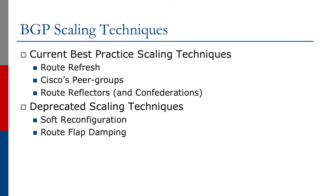Some of the current best practice scaling techniques include route refresh and the BGP route reflector. Cisco and other vendors have also introduced the concept of peer groups. There's also a scaling technique called route flap damping, which was introduced in the mid 90s to address a particular issue internet operators of the day were facing. We'll also look at Cisco's version of route refresh, which was introduced to deal with a particular issue prior to route refresh being standardized.